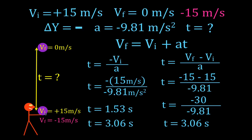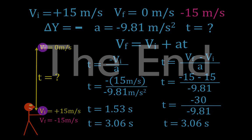If you project any object straight up into the air and it comes straight back down, the total time it will be in the air is 3.06 seconds. Thank you very much for watching. I hope you found that helpful. If you did, please give a thumbs up, leave a positive comment, and subscribe to my channel to get all my chemistry, physics, and math videos.